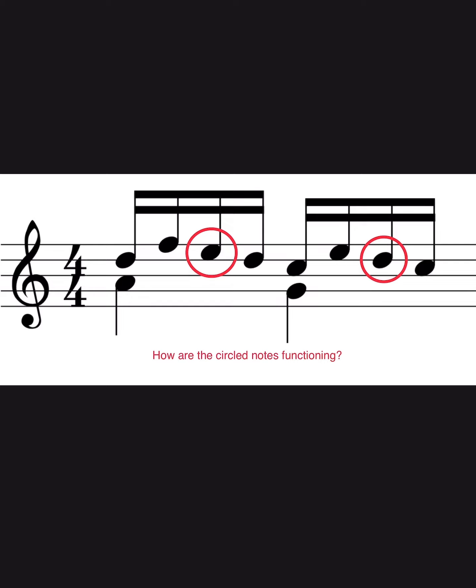It looks like the chord is changing on every beat, so let's figure out what the notes are. In the first beat, the bass note is an A, right above that is a D, the next note is an F, the circled note is an E, and then the last note is another D. We've got four different notes here.